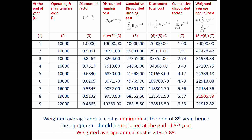The discounted running cost is R_r × V^(R−1), which is the product of the running cost column and the discount factor column: 10,000 × 1 for year 1; 10,000 × 0.9091 for year 2; 10,000 × 0.8264 for year 3, and so on. The cumulative discounted running cost is the cumulative present value: 10,000 for year 1; 10,000 + 9,091 = 19,091 for year 2; 19,091 + 8,264 = 27,355 for year 3, and so on.